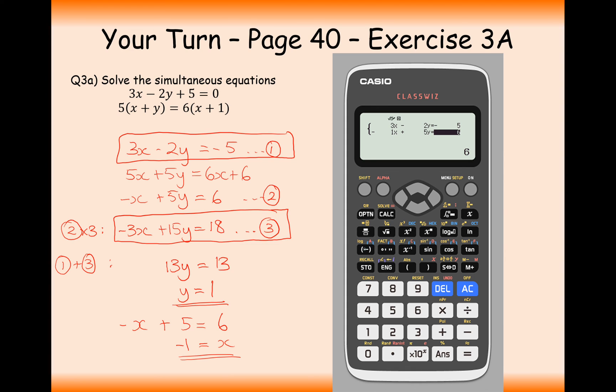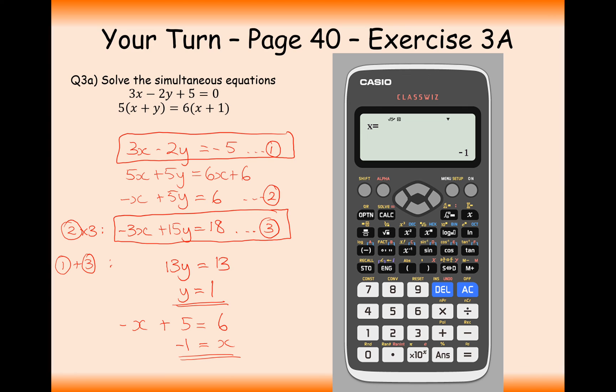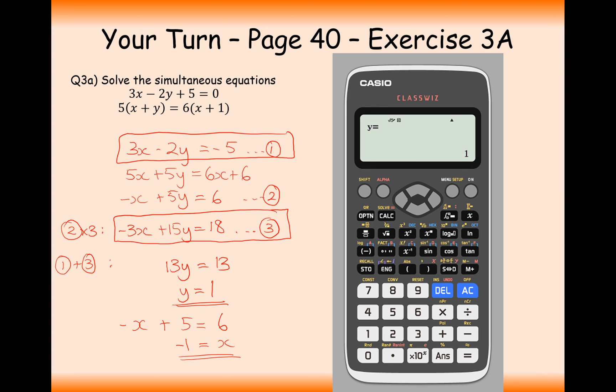Then just enter the coefficients on your simultaneous equations into your calculator. Notice how you'll also need to enter negatives into these equations, probably best using this negative button here. Press enter on those and you get the same answer, x is minus 1 and y is 1. So that's really useful to know that is there just in case you feel like you're going wrong somewhere.